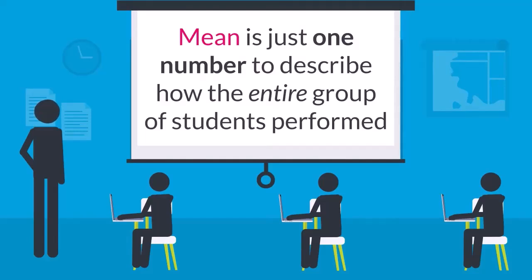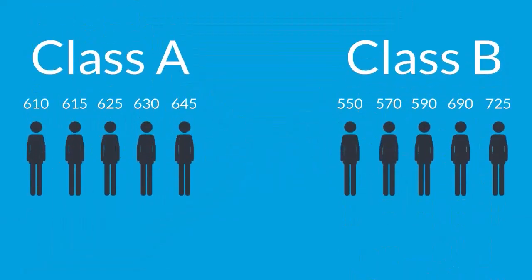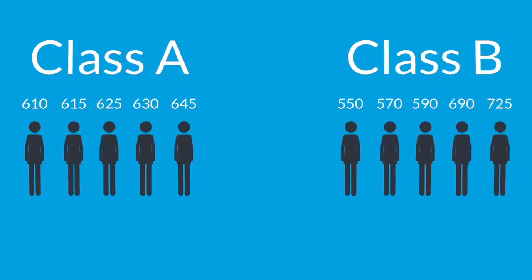That's because mean is just one number to describe how the entire group of students performed. Let's consider two different classes, Class A and Class B. And for simplicity, let's pretend these classes only have five students each.